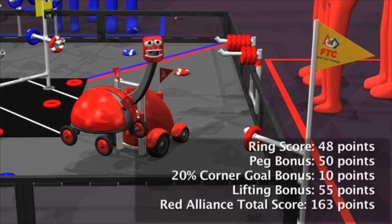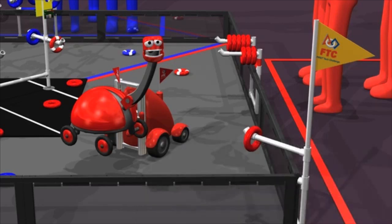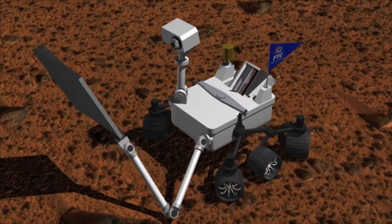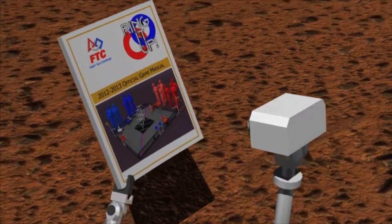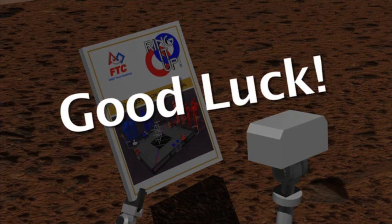With a total score of 163 points for the red alliance, the blue alliance takes the match, winning 165 to 163. Please download and read the game manual for the complete rules, scoring details, and penalties. Good luck, teams!